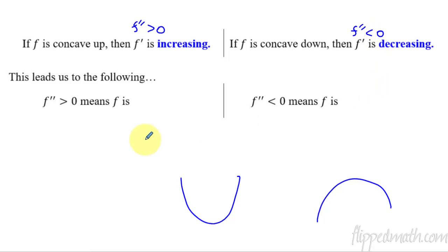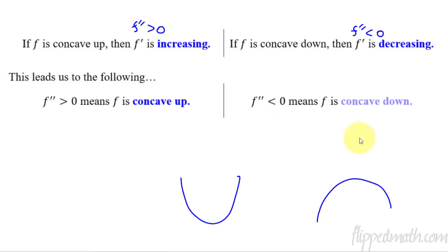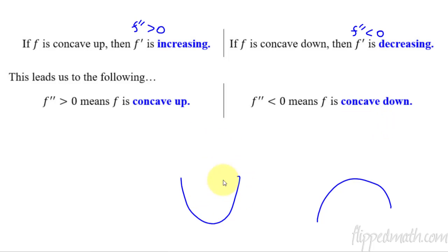It's less than zero. So now we can say that if the second derivative is positive, then f is concave up. And if the second derivative is negative, that means f is concave down. These two statements right here are the point of the lesson we're talking about today — to take the first derivative and then the second derivative and be able to tell if it's concave up or concave down. We're going to use this quite a bit in the next few lessons to help us understand the shapes of graphs.